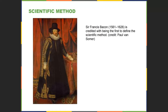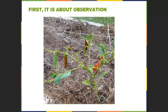Sir Francis Bacon is given credit for really putting parameters around and defining the scientific method. The scientific method is about observation — that is the first thing you have to understand. We make an observation, we put a hypothesis together — a thought, an idea of what might be going on — and then we use the scientific method to prove it or disprove it.